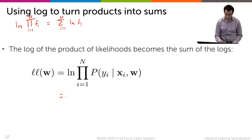And so in our case, what we're going to get is that the log likelihood function is going to be the sum over i equals one through n of the log of the probability of y_i given x_i and w.